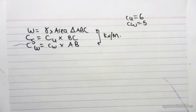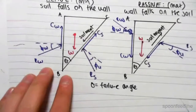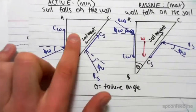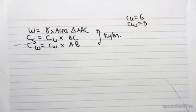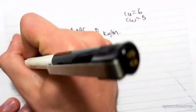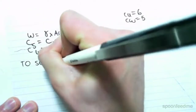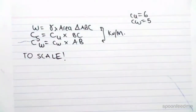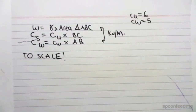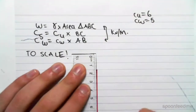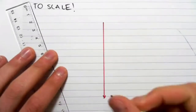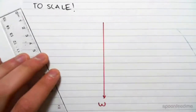Let's just see what this diagram will look like. The first thing we have in our diagram is the weight force. So we have a weight force going down. And this all has to be to scale, otherwise it won't work. We're going to do an example in the next video where you'll see me actually do this. But for now, we have a weight force coming down — so there's W, our weight force.